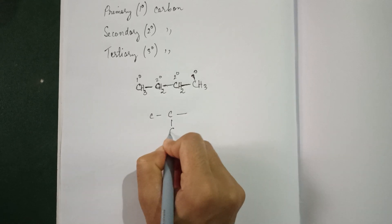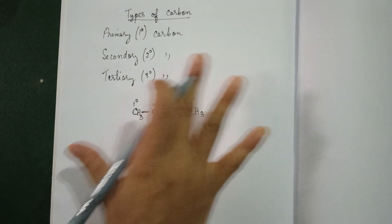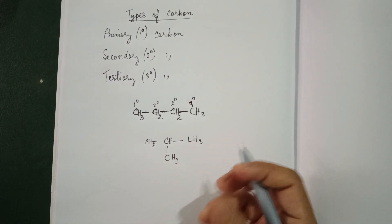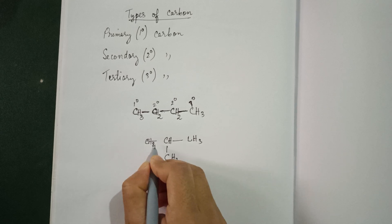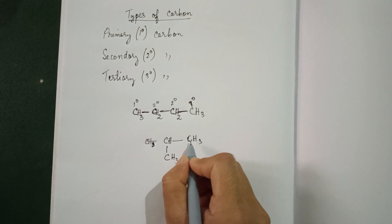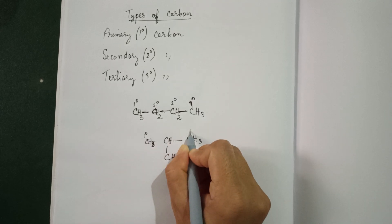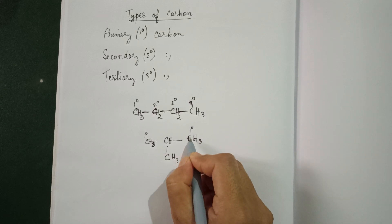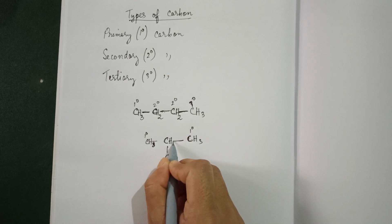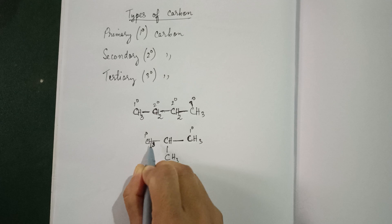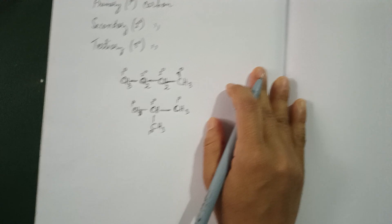You can draw any carbon chain — this is the beauty of carbon. We can increase the chain as much as possible. This is called the catenation property. Now, terminal carbon with a single bond is primary. This carbon is directly bonded to one, two, three carbons, so this is your tertiary carbon.